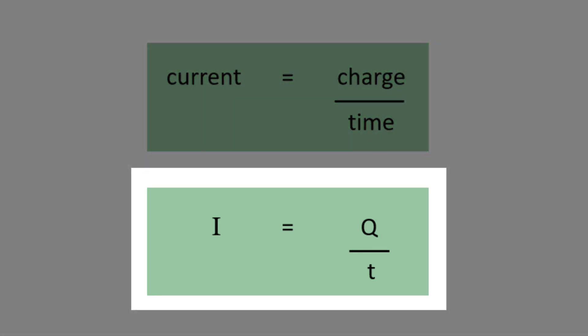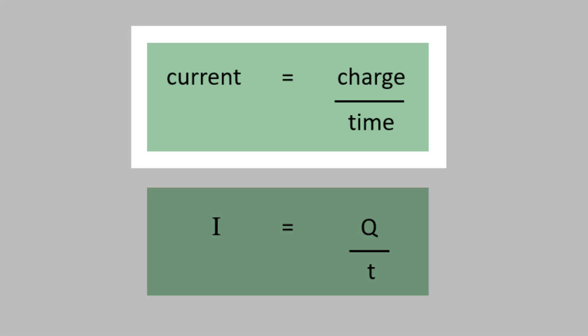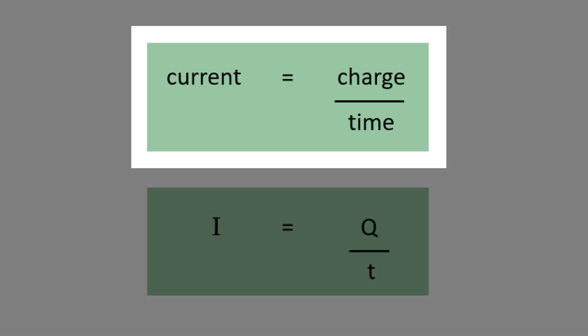To calculate current we use the equation I equals Q over t. This says the current flowing past a point is equal to the amount of charge flowing past that point divided by the time it took to flow.